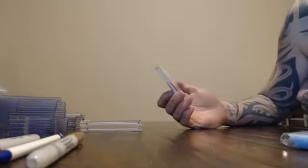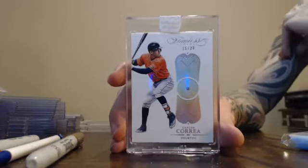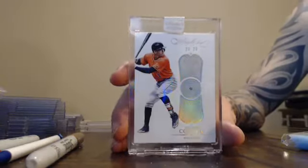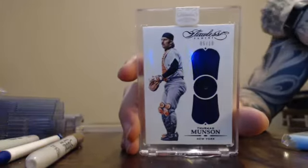Magnetics numbered 15 to 20, Carlos Correa. Numbered 5 of 10, Thurman Munson.